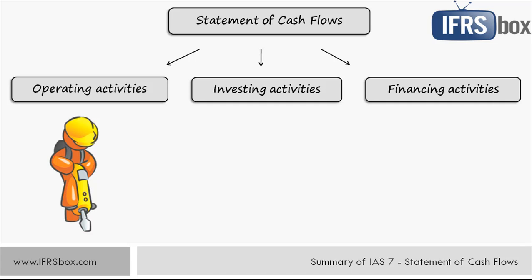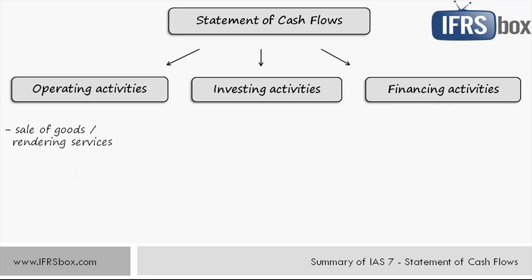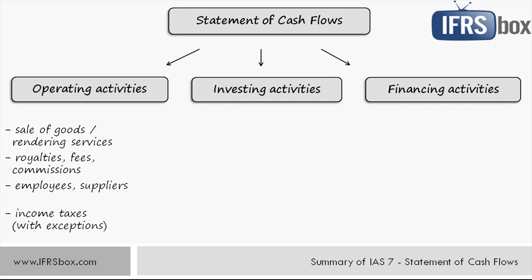Transactions in the operating part include: cash receipts from the sale of goods and rendering of services; cash receipts from royalties, fees, commissions and other revenue; cash payments to suppliers of goods and services, and to and on behalf of employees — including payments to social security institutions or tax authorities; and cash payments or refunds of income taxes, unless they can be specifically identified with financing and investing activities. Other cash flows might also enter, making the operating part probably the most complex one.